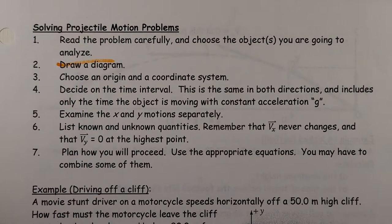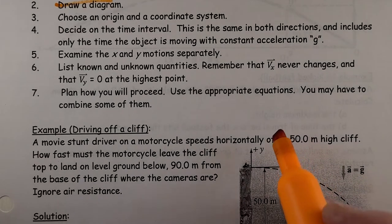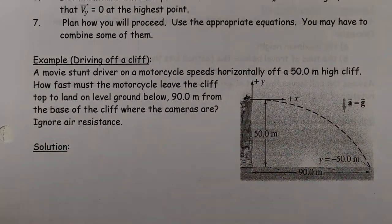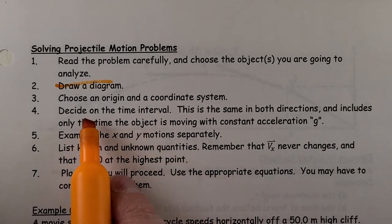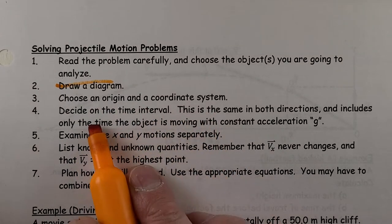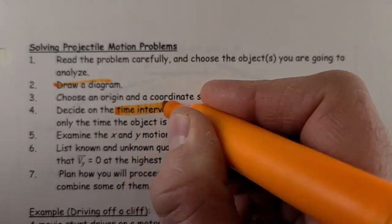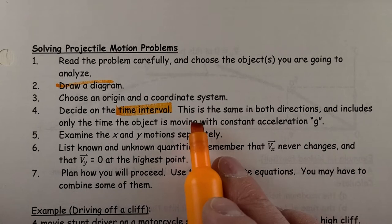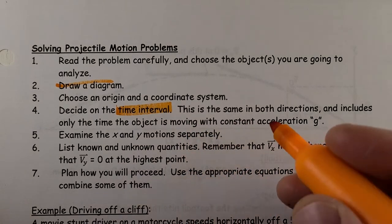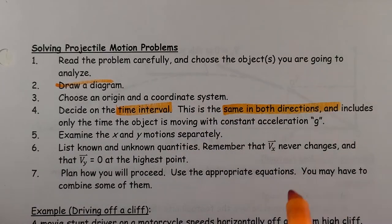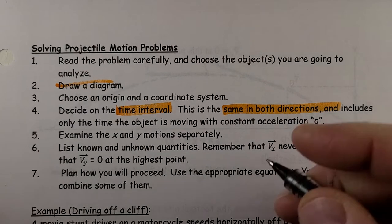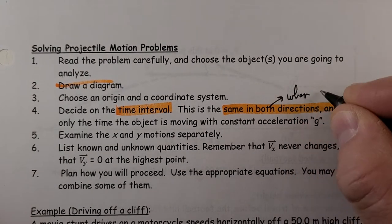It always helps to draw a diagram. A diagram is drawn for you here, but it's a good idea to draw one yourself. Choose an origin and coordinate system, and decide on the time of travel. This is a key thing: the time is the same in both directions.